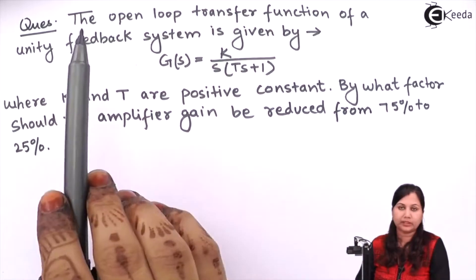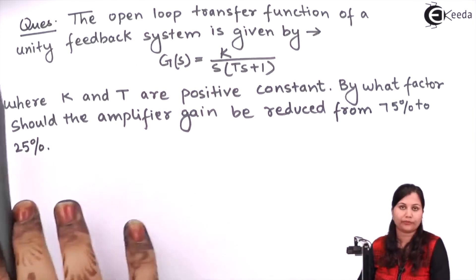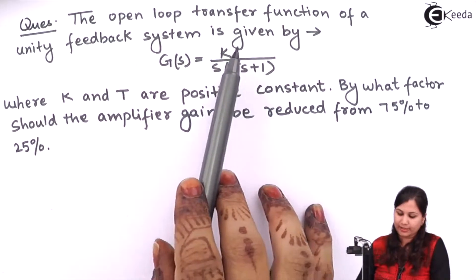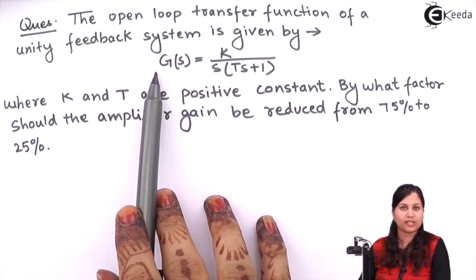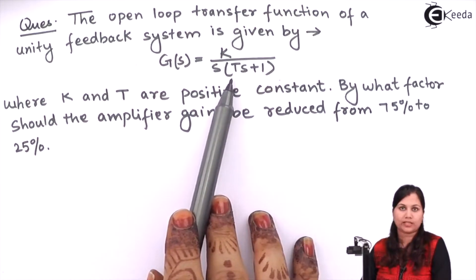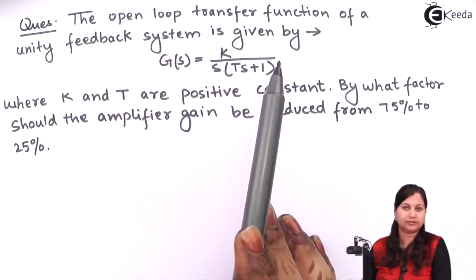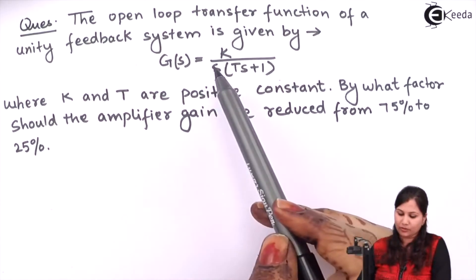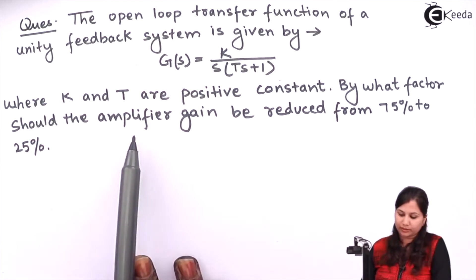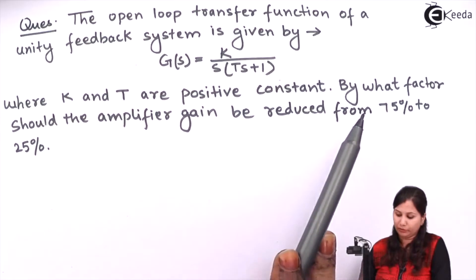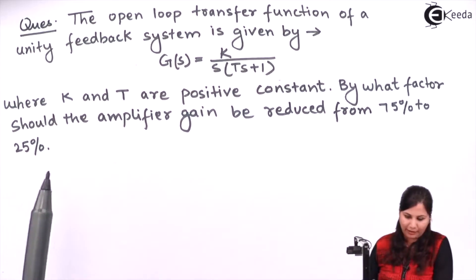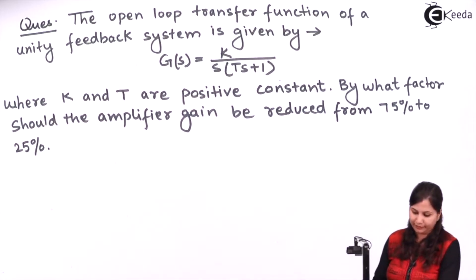In this problem we are given the open-loop transfer function of a system which has unity feedback, and this open-loop transfer function is G(s) = K / (s(Ts + 1)). T is the time constant and K is the amplifier gain. Now by what factor should the amplifier gain be reduced so that the overshoot goes from 75% to 25%? We have to find that factor.